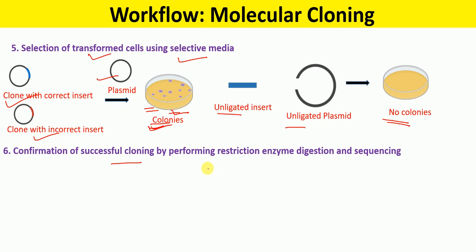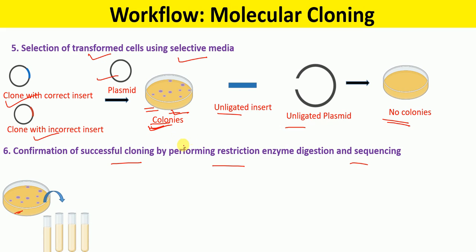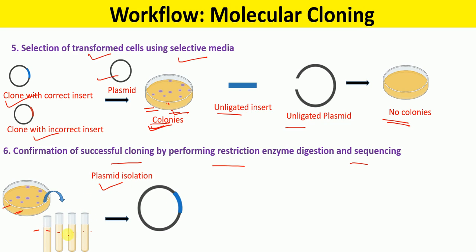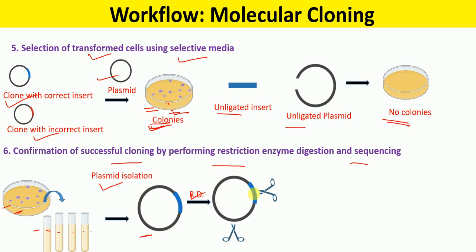After selection using selective media, we confirm successful cloning by performing restriction enzyme digestion and sequencing. We pick colonies from this plate and prepare a mini culture for each colony picked. In the next step, we isolate the plasmid from each mini culture, and then perform restriction digestion using enzymes where at least one cuts within the insert and another cuts outside, or we can select another set of enzymes. We cut the isolated plasmid using suitable restriction enzymes.